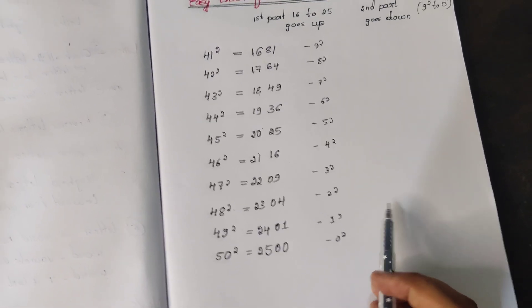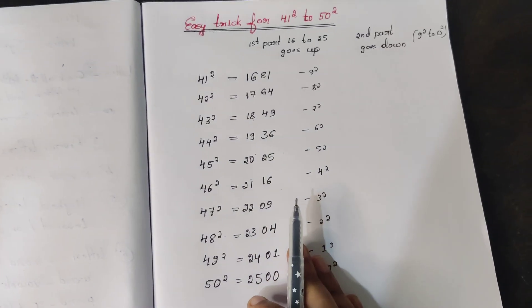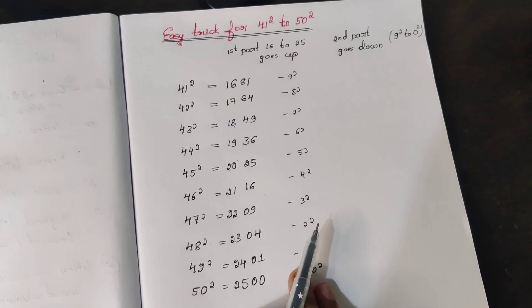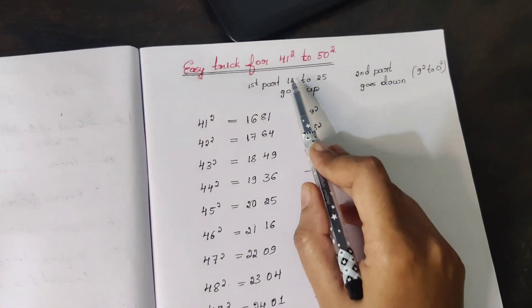get 1681, 1764, 1849, like this. So just remember: the first part goes up from 16 to 25, and the last part goes down from 9 square to 0 square.